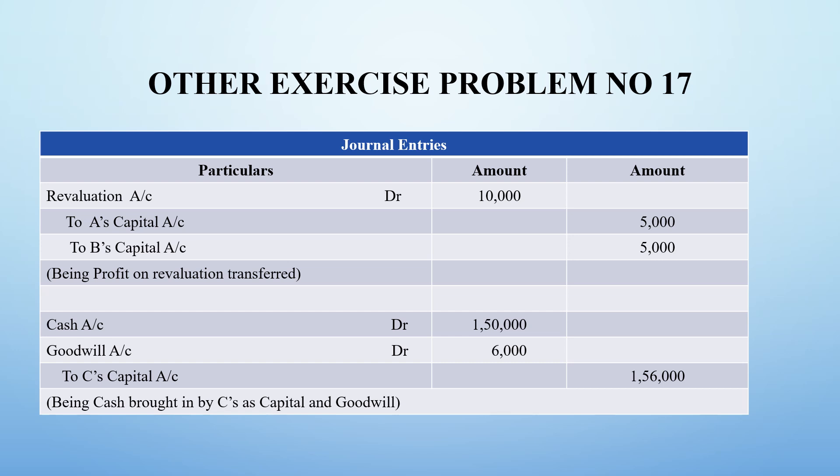The next entry covers C bringing in capital and goodwill. C has brought in cash of Rs. 1,50,000 as capital and goodwill of Rs. 6,000, debited to C's capital, which is Rs. 1,56,000. This is the journal entry — these are the new terms and this is how we calculate and apply them.